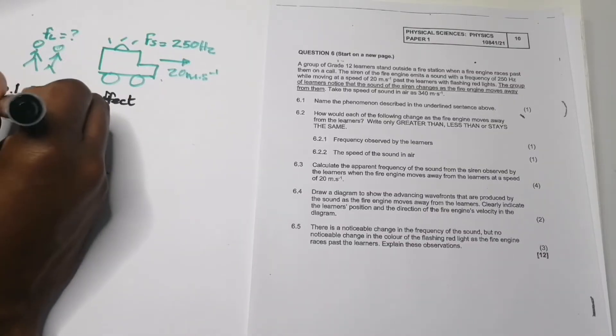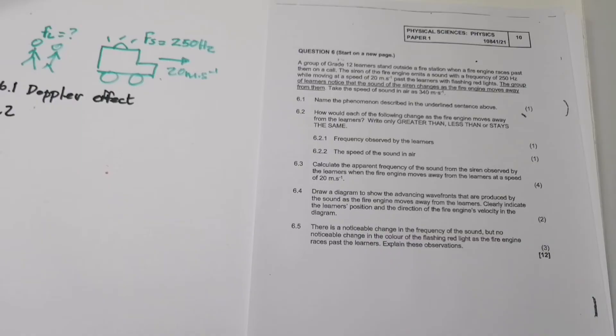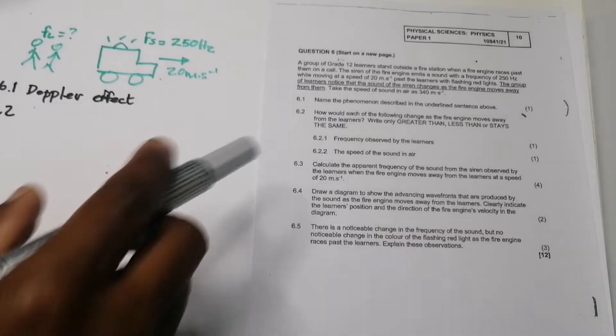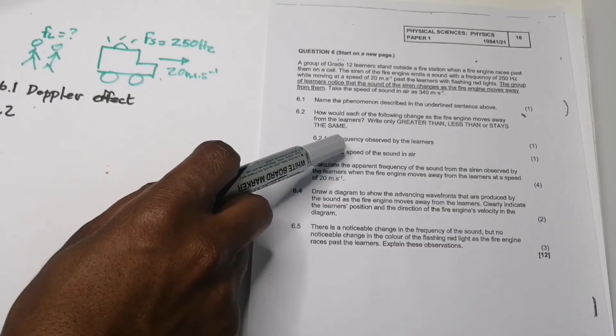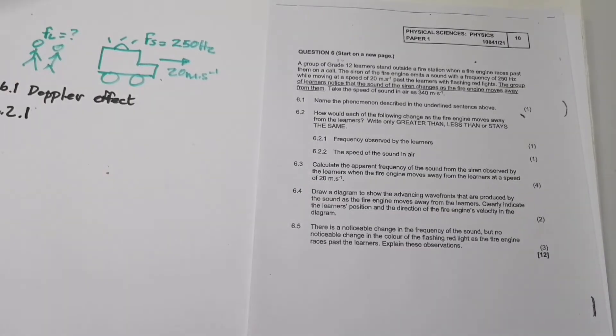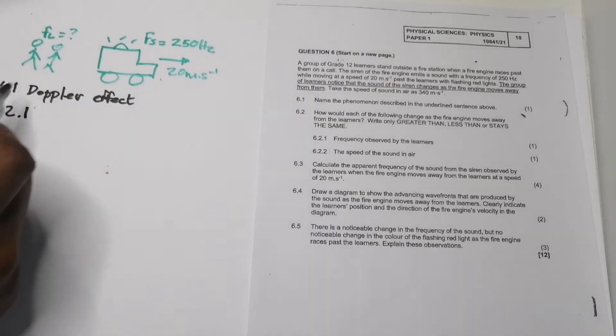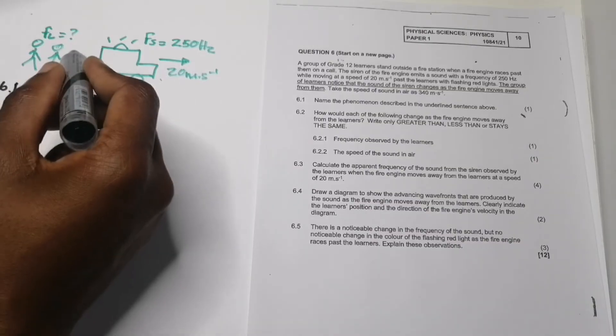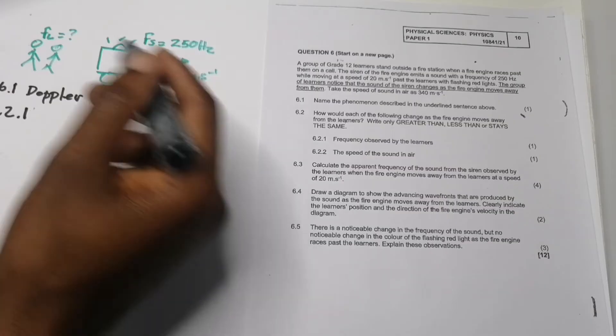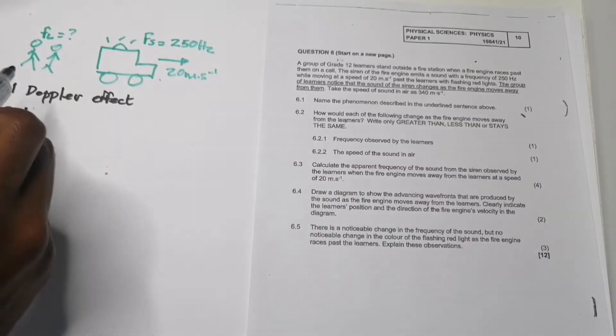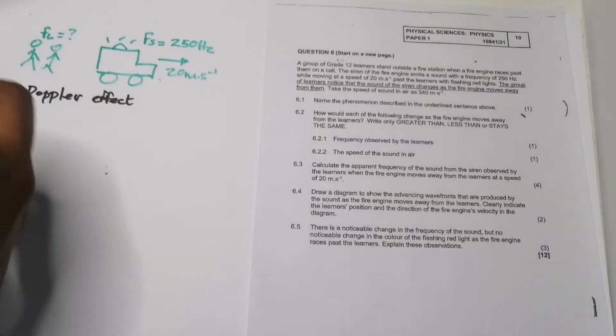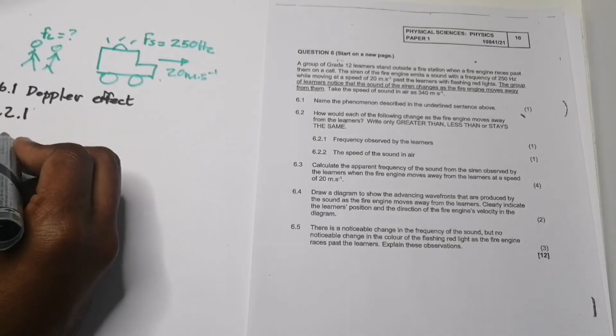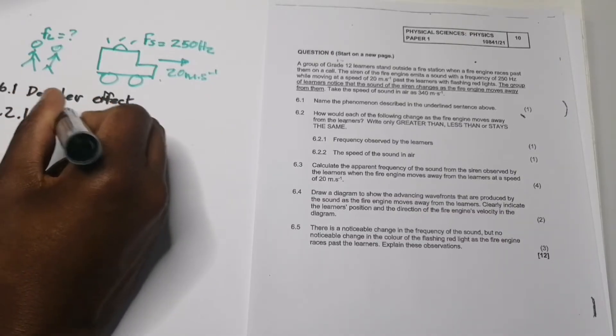In question 6.2.1, they ask how would the frequency observed by the learners change as the fire engine moves away. As it moves away, the waves are stretched, so the wavelength is longer and the frequency is lower. The frequency would be less than.